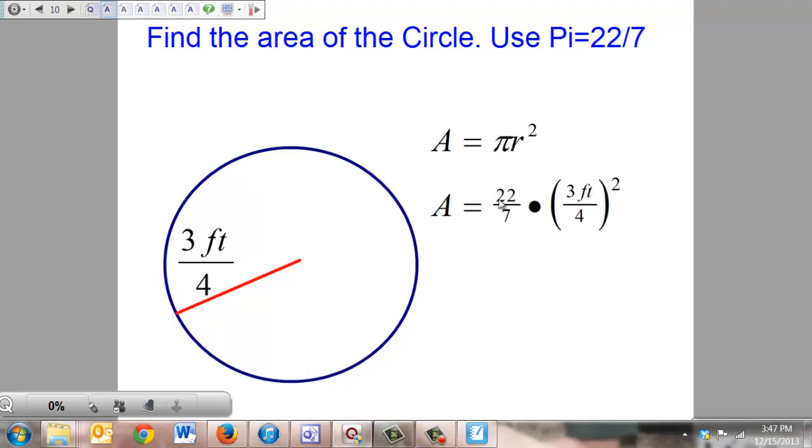Next thing we're going to do is fill in our missing spots, and then we're going to square everything that is inside the grouping symbol there. We're going to square the 3, we're going to square the 4, and we're going to square the feet.